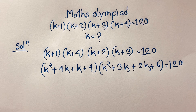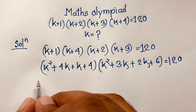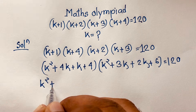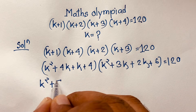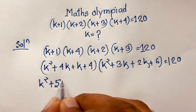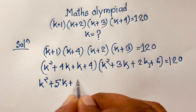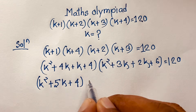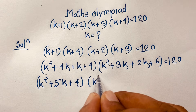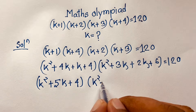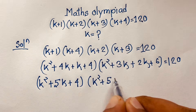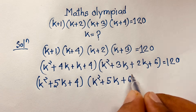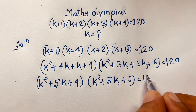Now at this moment you can see we have a nice structure. The first expression is k² + 5k + 4, and the second expression is k² + 5k + 6, and their product equals 120.